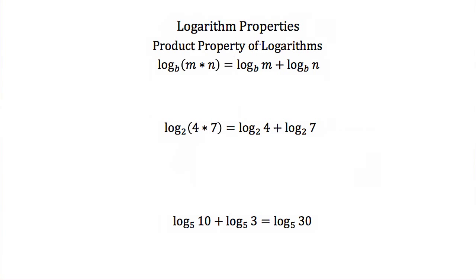The product property of logarithms states that if we have the log of two numbers multiplied together — in this case m and n — that's equal to the log of m plus the log of n, as long as we have the same base throughout the expression.